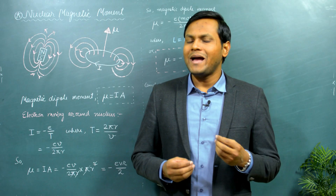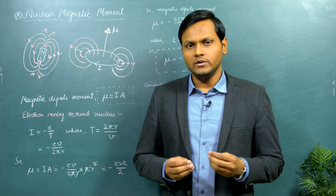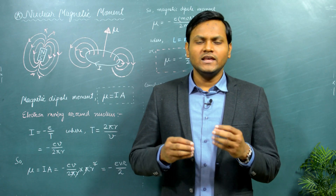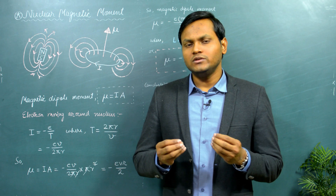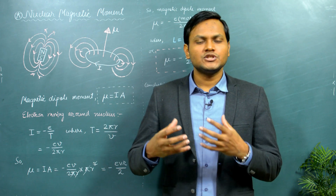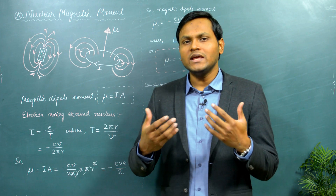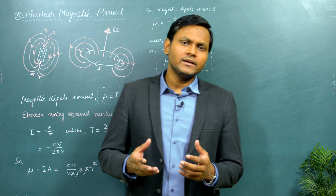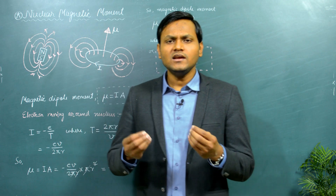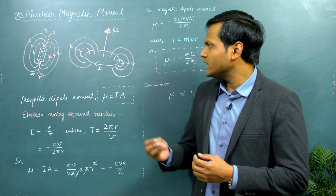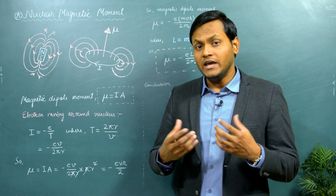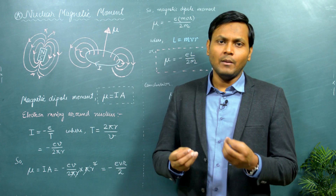Magnetic moment or magnetic dipole moment is a physical quantity that gives an idea about the magnetic strength and orientation of a bar magnet or any other physical object that might replicate the behavior of a bar magnet.